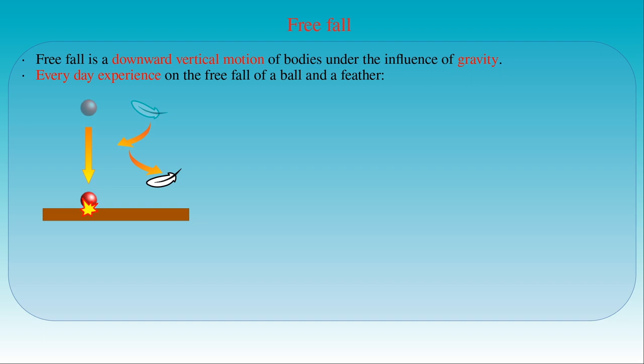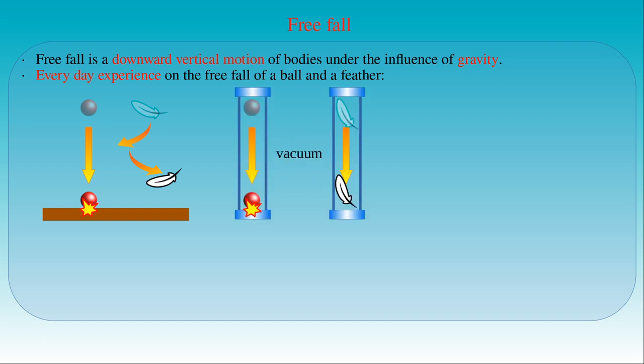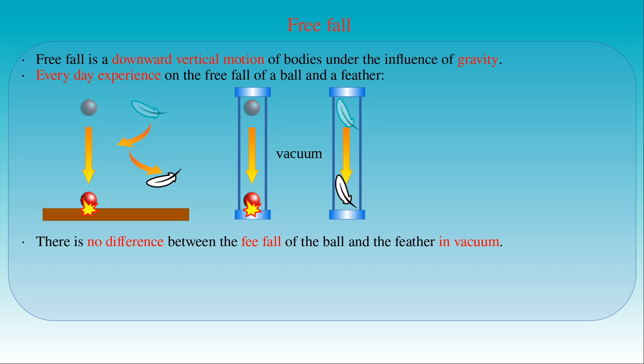If we drop the ball and feather from the same height at the same time, the ball has a downward vertical motion, whereas the feather has a somewhat turbulent one deviating from the straight vertical line. The feather falls much more slowly than the ball. However, the significant difference between their motion is the consequence of air resistance. If we carry out the same experiment in vacuum, we eliminate the effect of air resistance. By putting the ball and feather in a glass tube and sucking the air out with a pump, we can drop the bodies in vacuum. As a result, both the trajectory and the speed will be the same, and they reach the bottom of the tube at the same time.